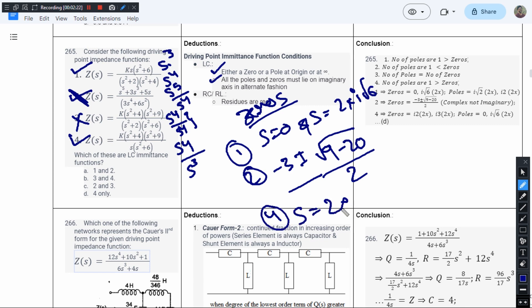So here we have zeros: s equals 2i, s equals 2i√2, and s equals 2i√3. Let us check for another condition. So I don't think we have another condition here, so the answer should be either 1 or 4.